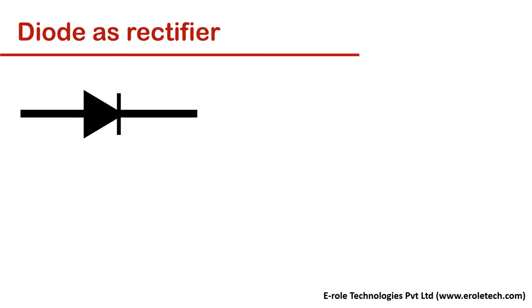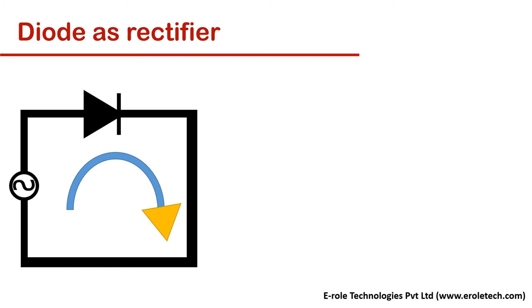Diodes are widely used as rectifiers. Rectifiers are used to convert AC supply into DC supply. When we use a single diode with AC supply, it blocks the negative cycle of AC current and allows the positive cycle. This is called half wave rectifier.